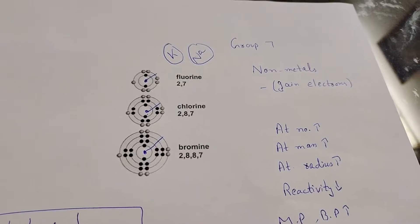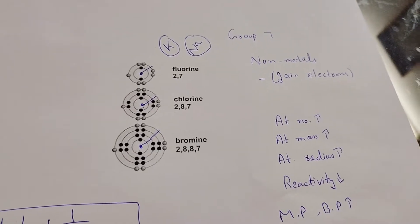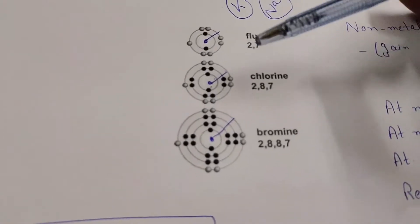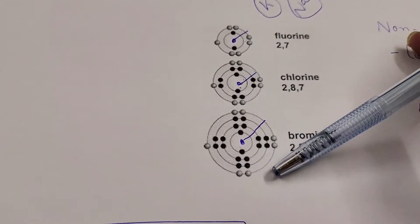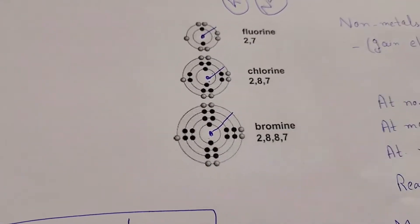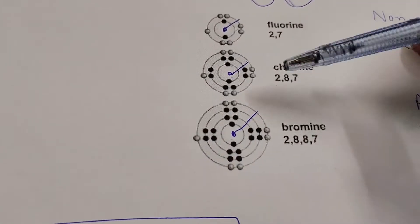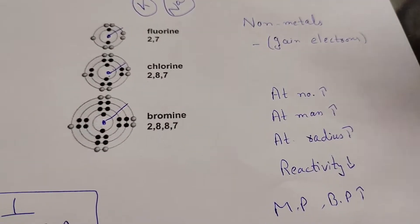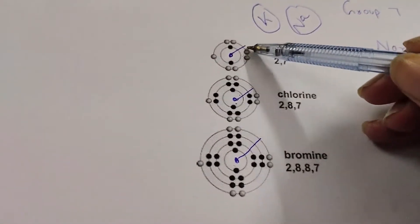Group seven elements are also called halogens. All elements in group seven contain seven valence electrons — seven electrons in the outermost shell. Fluorine, chlorine, and bromine are examples. As we move downward, the number of shells increases — fluorine has two shells, chlorine has three, and bromine has four. So atomic number, atomic mass, and atomic radius all increase.